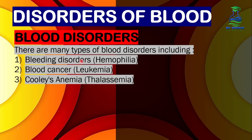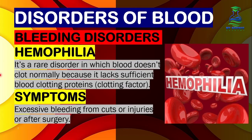Number 1 is the bleeding disorder, which is called hemophilia. Number 2 is blood cancer, also called leukemia. And number 3 is Cooley's anemia, which is a type of thalassemia. First of all, we will discuss hemophilia, which is a bleeding disorder.